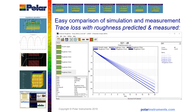LA9000 can be used with any S-parameter source that generates a touchstone file, so you can compare one VNA with another, or TDR-derived S-parameter results, or between one modelling tool and another. But it works best when you drive it from the projects facility in the SI9000.